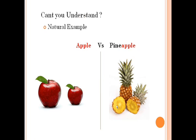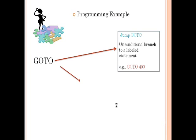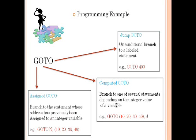The same thing happens with the syntax consistency principle. One example is the goto statement in Fortran — a programming example that violates this principle. There are three types of goto statement in Fortran. If you check computed goto and assigned goto, the names look similar but their functionality is totally different. The purpose of computed goto and assigned goto are totally different, but they use the same name 'goto', and the same parenthesis appears in different places. So it is difficult to understand, because they use the same name but their functionality is different. Therefore, we say goto statements in Fortran violate this principle.